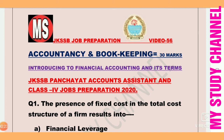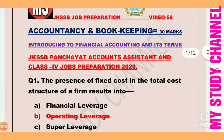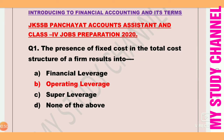Question number one: The presence of fixed cost in the total cost structure of a firm results into — option A is financial leverage, B is operating leverage, C is super leverage, and D is none of the above. The right answer is option B, that is operating leverage.